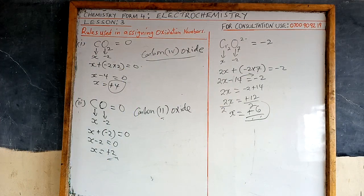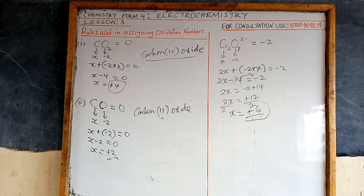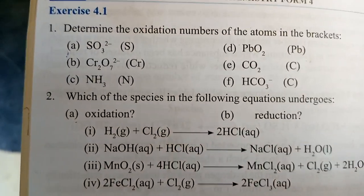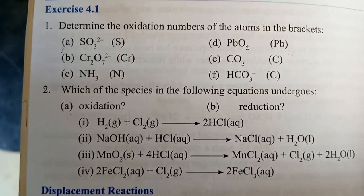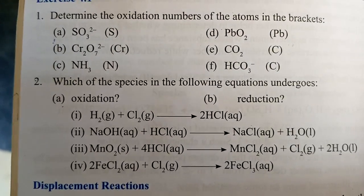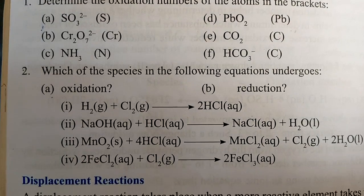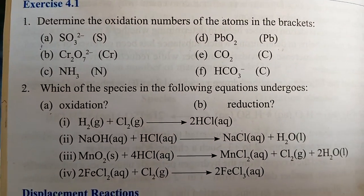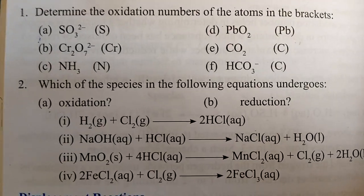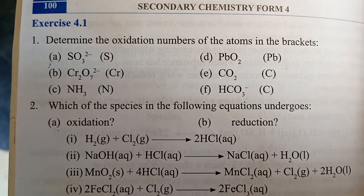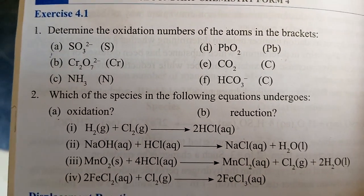So those are the oxidation rules, and that is how to apply them. For your practice, here are a few questions — exercise 4.1: determine the oxidation numbers of the atoms in brackets, and identify which species in the given equation undergo oxidation and which undergo reduction. Pause and copy these questions and attempt them at home. For my students, when schools reopen I will check this work — it is compulsory.